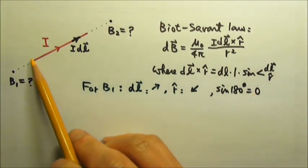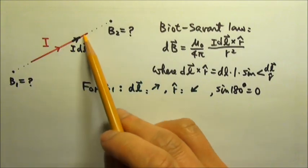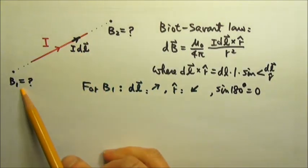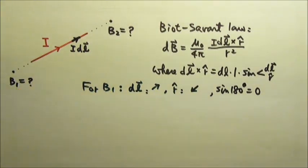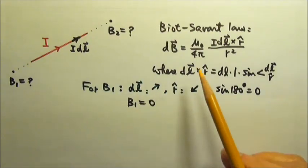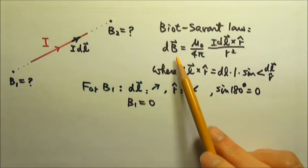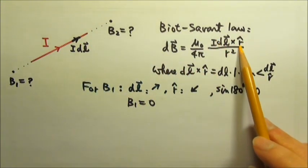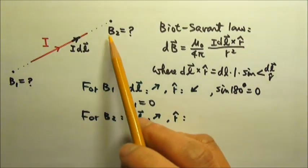Now this will be true for every segment of the point current along the straight current. So B1 would be... B1 is zero because every dB here would give us a cross product that equals zero.